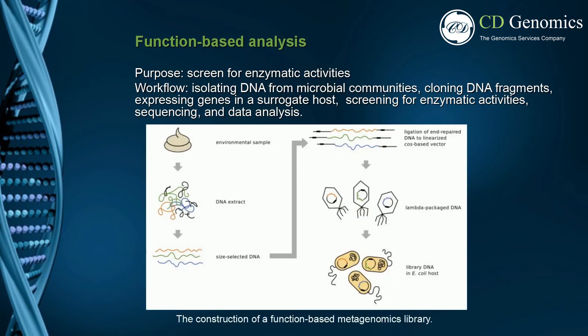DNA is first extracted from the environmental sample of interest, then size selected and repaired, and ligated to a cos-based vector, allowing packaging by lambda phage for subsequent transduction of Escherichia coli. The resulting library contains relatively large insert DNA, typically 25 to 40 KB for cos-based vectors. Functional analysis has identified novel antibiotics and antibiotic resistance genes.